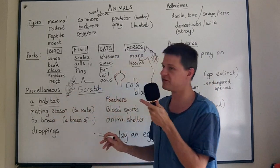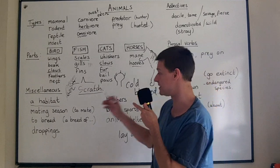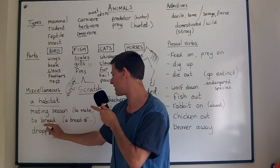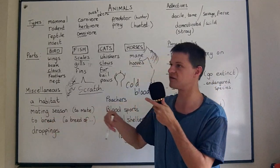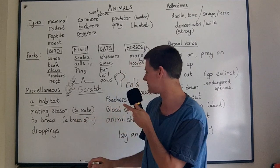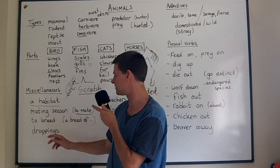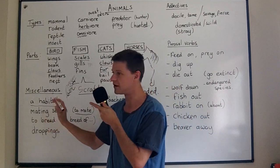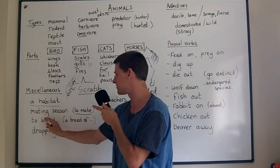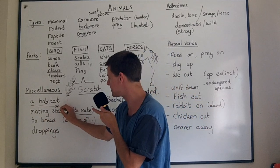Some miscellaneous words: a habitat is any place where an animal lives and breeds. To breed is to reproduce, the same as to mate. There's a certain time of year for some animals when they mate, and we call this the mating season or the mating period.